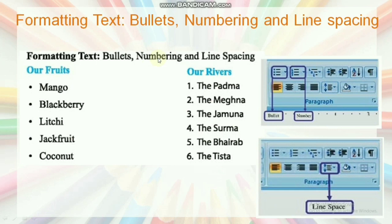Now we shall discuss formatting text: bullet, numbering, and line spacing. There are letters of different styles in word processor. Sometimes we make lists of different things and use either a sign, letter, or numbers to maintain order. This is called bullets and numbering in the word processor.